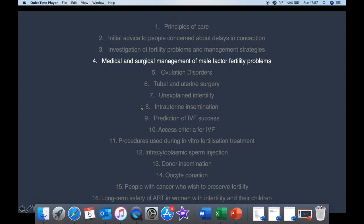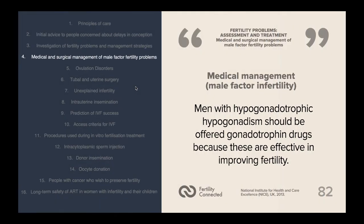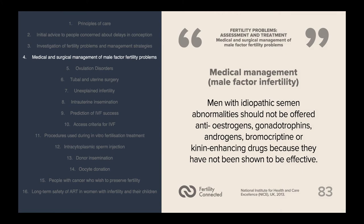In chapter four, we discuss the medical and surgical management of male factor fertility problems. Men with hypogonadotrophic hypogonadism should be offered gonadotrophic drugs, as these are the most effective in improving fertility for males of this background. Men with idiopathic semen abnormality should not be offered anti-oestrogens, gonadotrophins, androgens, bromocryptine or kinin-enhancing drugs, because they have not been shown to be effective. Men should be informed that the significance of anti-sperm antibodies is unclear and the effectiveness of systemic corticosteroids is uncertain.